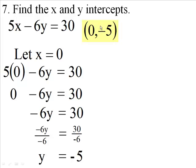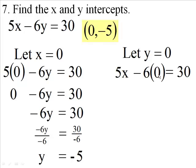To find the x-intercept, instead of x being 0, we're going to say let y be 0. In this case, I have 5 times x minus 6 times 0. Instead of 6y, we have 6 times 0.